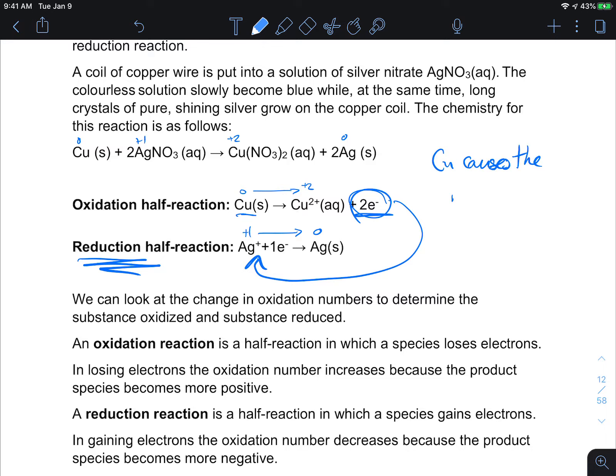So copper causes the reduction of the silver plus. So therefore it is the reducing agent. Who caused the reduction? Copper.